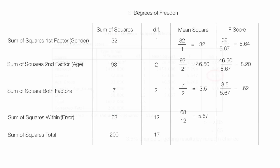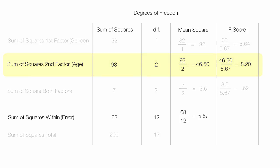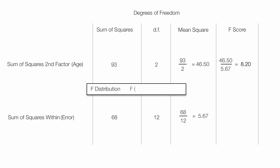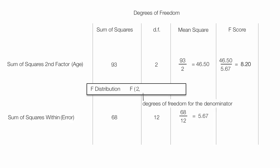Now I'll calculate the F-score for the second factor — age. The mean square is the sum of squares divided by the degrees of freedom, which is 93 divided by 2. The F-distribution notation is written as F(2, 12) = 8.20, p < 0.05, meaning I'm testing at the 95% confidence level.